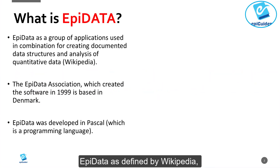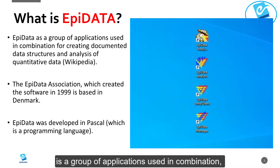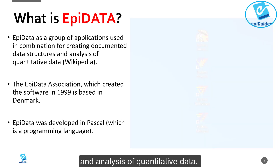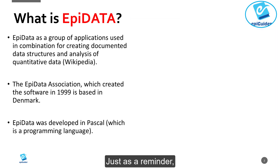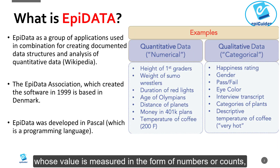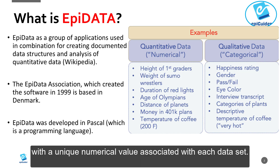APdata, as defined by Wikipedia, is a group of applications used in combination for creating documented data structures and analysis of quantitative data. As a reminder, quantitative data is the type of data whose value is measured in the form of numbers or counts, with a unique numerical value associated with each data set.